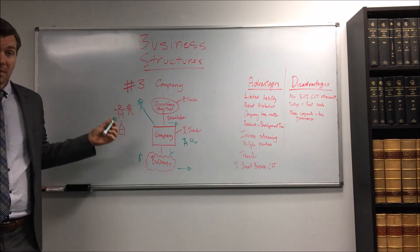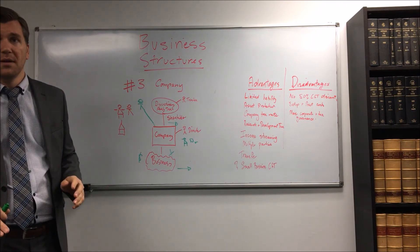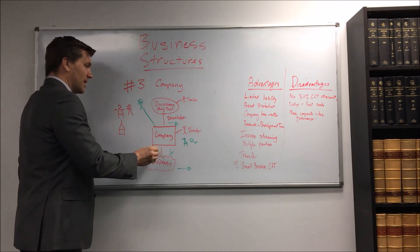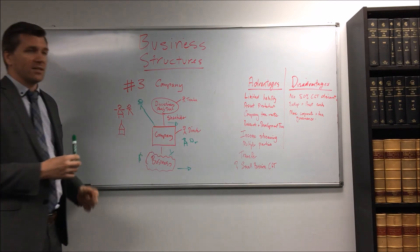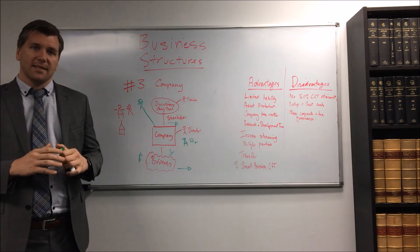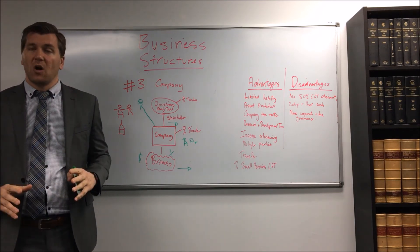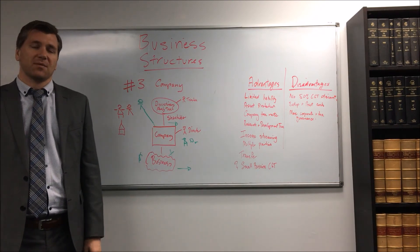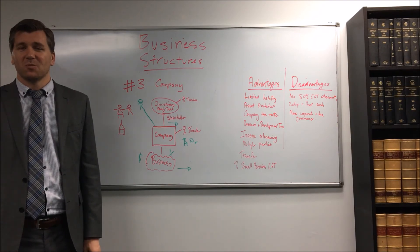So a company owned by a discretionary trust, one of the most common business structures. Summing up you get the company tax rate, you can easily retain profits in there, you get asset protection, limits of liability, and it's common, easy to add other parties. Your accountant's going to be really familiar with it. Thank you very much, this is Adrian Cartland, principal of Cartland Law.